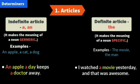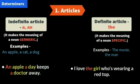'I watched a movie yesterday and that was awesome' — here we are not saying a particular movie. 'I love the girl who is wearing a red top' — that particular girl wearing the red top. If you want to show particularity, you should use the word 'the' itself. Read the sentence completely and then insert 'a,' 'an,' or 'the.'